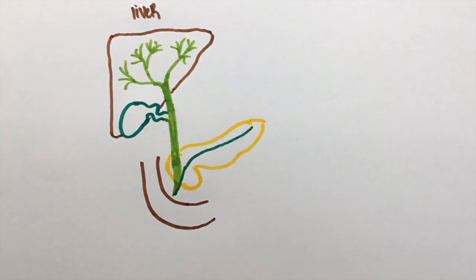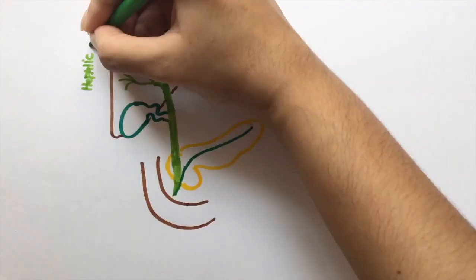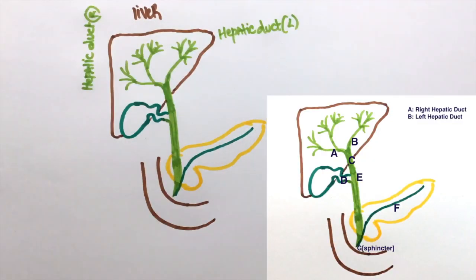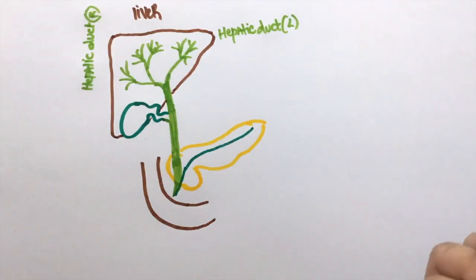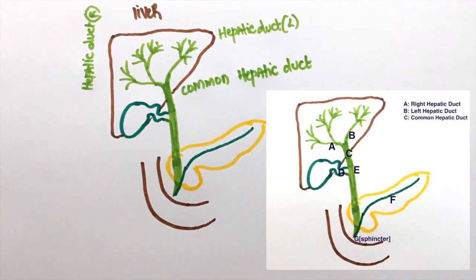This is the liver. The term hepatic is always associated with the liver. So, this is the right hepatic duct and this is the left hepatic duct. The right and left hepatic ducts combine to give rise to the common hepatic duct.